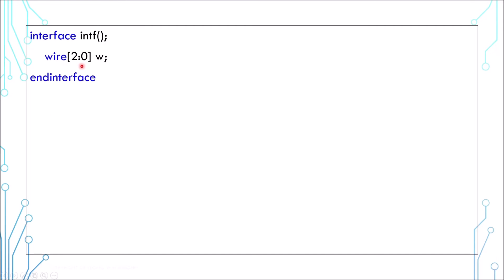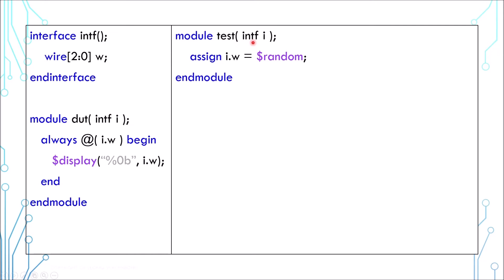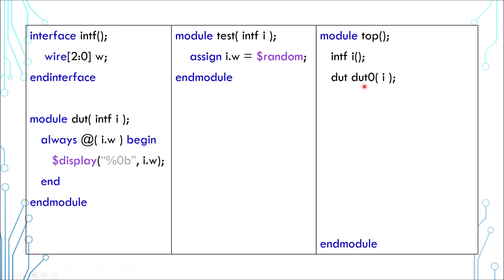Now let's look at a basic testbench. This is an interface with a 3-bit wire. This is a module — it prints out the value on the wires; let's pretend it's a design. This is a test — it drives the wires with a random value. This is a top level — it instantiates the interface, the design, and the test. And there you go, this is a simple testbench.